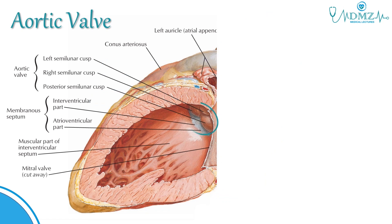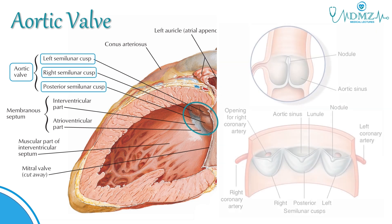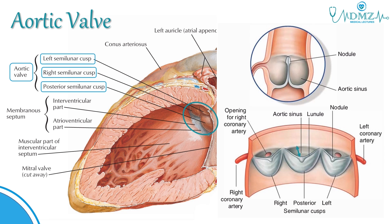The valve located at the opening from the left ventricle into the aorta is called the aortic valve. This valve is similar in structure to the pulmonary valve. It consists of three semilunar cusps: the left, right, and posterior semilunar cusps. Between the semilunar cusps and the wall of the ascending aorta are pocket-like sinuses called the aortic sinuses.